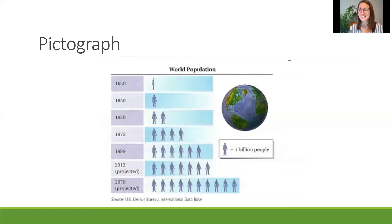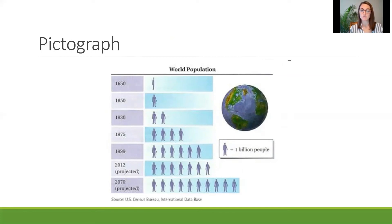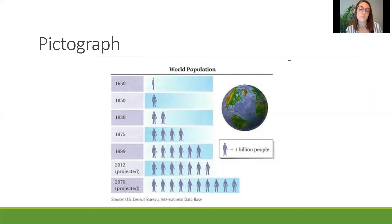The last type we're going to look at today is the pictograph. A pictograph is a way of getting an idea of how much of something we have — it uses pictures instead of numbers or lines. Our picture here is of a person, and this chart is about world population. Looking at the left side, we can see the years listed: 1650, 1850, 1930, 1975, 1999, 2012 projected, and 2070 projected. This graph was made before 2012, because 2012 is listed as 'projected,' meaning it was a future estimate at the time.